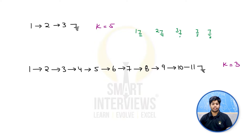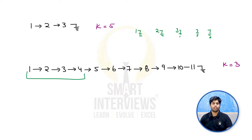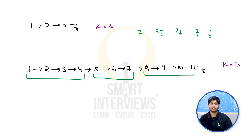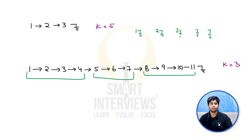For the second example, we might think the first part should contain values 1 through 4, the second part 5, 6, and 7, and the third part 8, 9, 10, 11. But that is not exactly right. Why? Because the parts that appear earlier should be of higher length compared to the parts that appear later.